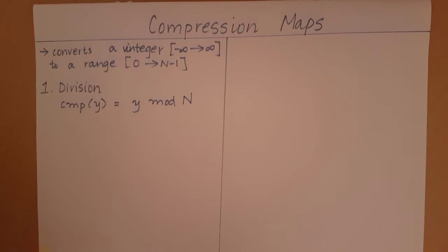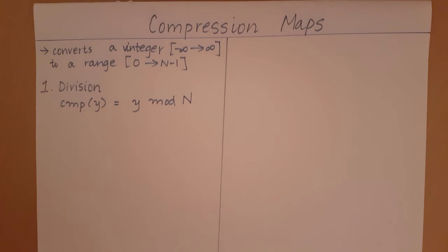This is because whenever we divide anything by an integer, say n, we can and will only get the remainder as some value between 0 to n-1. The remainder can never exceed this. So this is the first way in which we can compress a wide range into the range which we want.